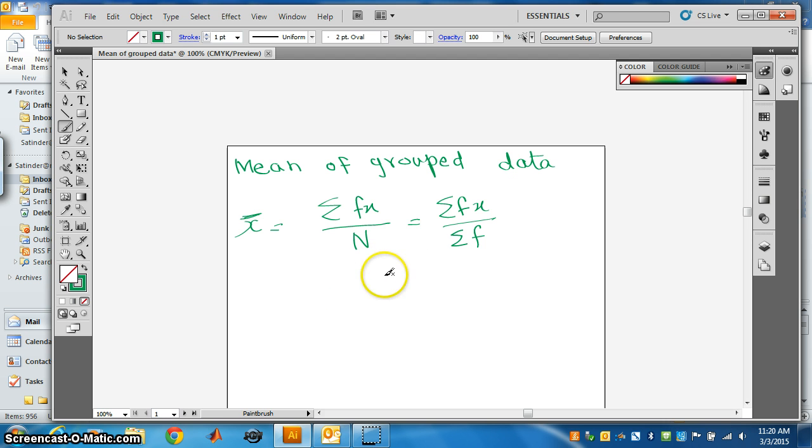So we can say this is equal to f1 times x1, same thing f2 times x2 and so on, last one fn times xn, divided by sigma f.